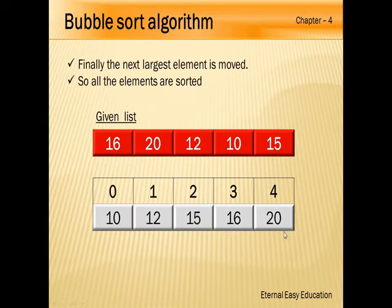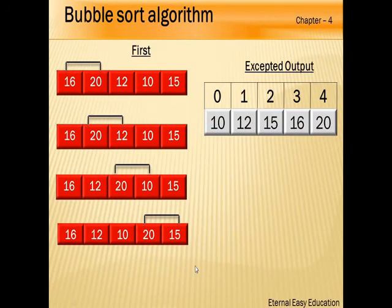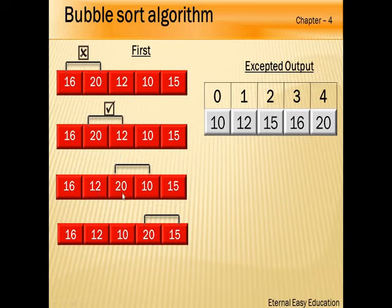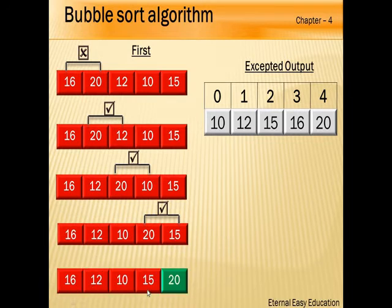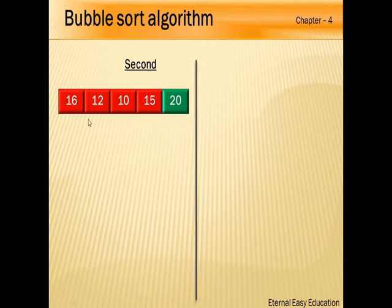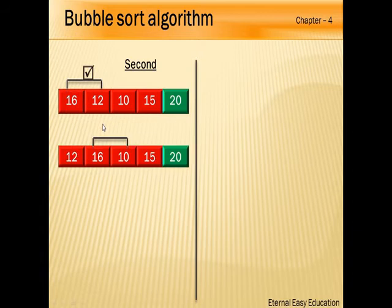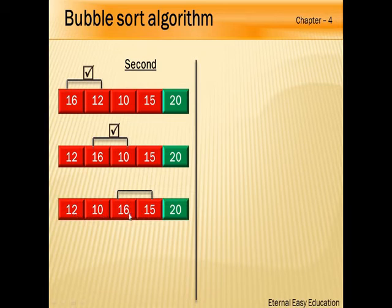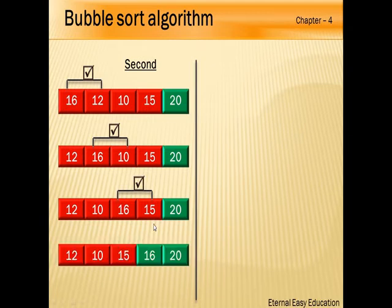Let's recap. The given list is 16, 20, 12, 10, 15 and the sorted list is 10, 12, 15, 16, 20. Step 1: 16 and 20 — no swapping. 20 and 12 — swapped. 20 and 10 — swapped. 20 and 15 — swapped. Largest element 20 is last. Step 2: Compare 16 and 12 — swap. Compare 16 and 10 — swap. Compare 16 and 15 — swap. The list is now 12, 10, 15, 16, 20.